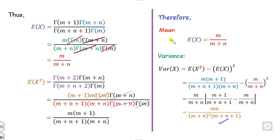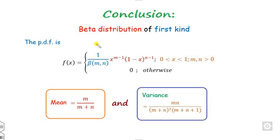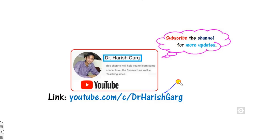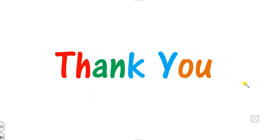In conclusion, for the beta distribution of the first kind, the mean is m/(m+n) and the variance is as derived. That is a quite short proof for the beta distribution of the first kind. In our next class we will see how to find the mean and variance of the beta distribution of the second kind. Till then, follow the link for more updated videos. Best of luck students, thank you very much.